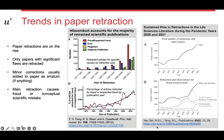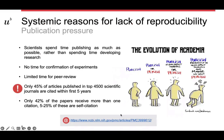What is the reason for these common problems with reproducibility? There are many structural reasons. Perhaps the most important is the publish-or-perish culture in academia. Scientists have to spend a lot of time publishing, much more than developing research. There is usually no time for confirmation of experiments, and limited time for peer review. Only 45% of articles published in 4,500 scientific journals are cited within the first five years, and only 42% of papers receive more than one citation, of which 5 to 25% are self-cites. Much of the literature is never reviewed or has no replication attempt by anyone.